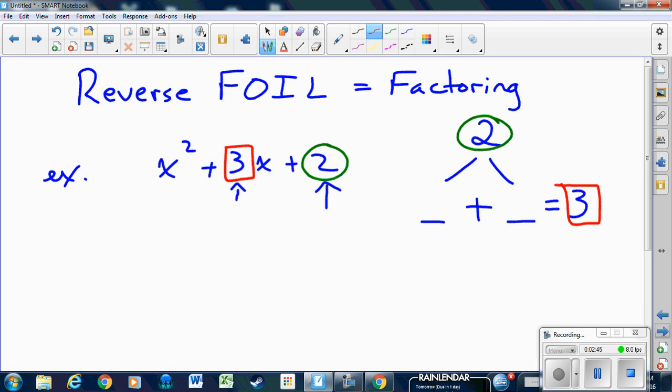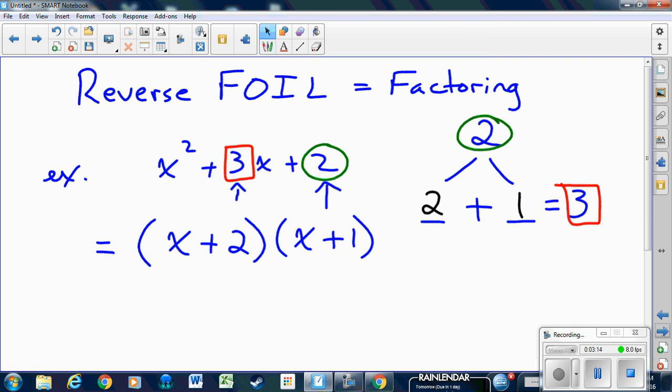Now you have to go through the factors of 2. What are all the numbers that multiply to 2? In this case, the only two numbers that multiply to 2 are 2 and 1, and they happen to also add to 3. Once you've found those two numbers, all you have to do is write the final brackets with those two numbers inside. It really doesn't matter what order you put them in, but those numbers go into those two brackets to give you your final factor form.